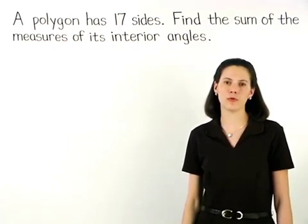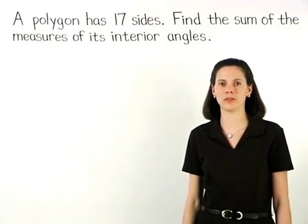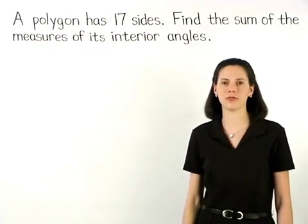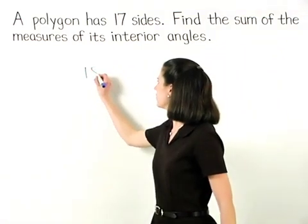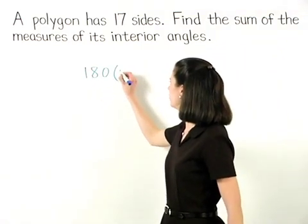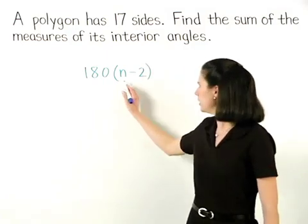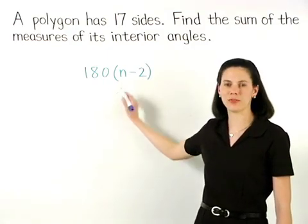Remember that the formula for finding the sum of the measures of the interior angles of a polygon is 180 times n minus 2, where n represents the number of sides.